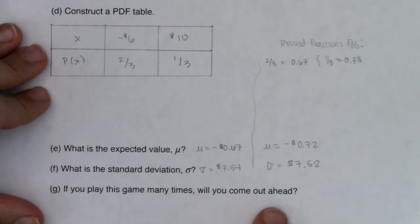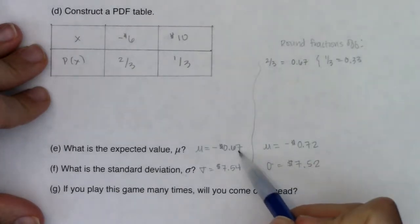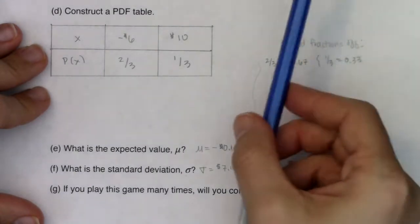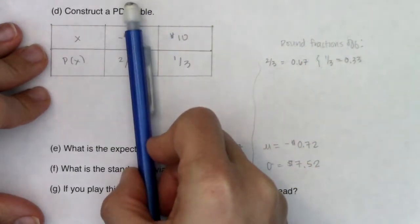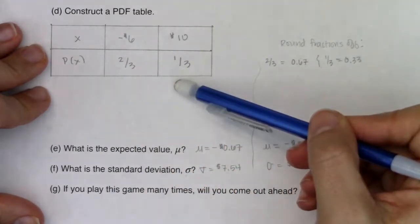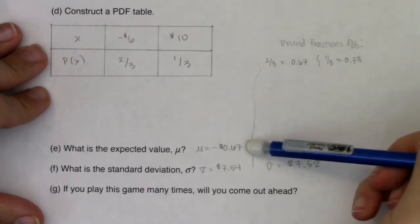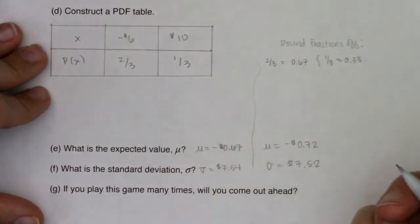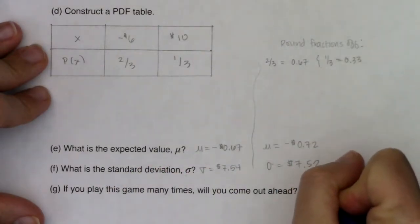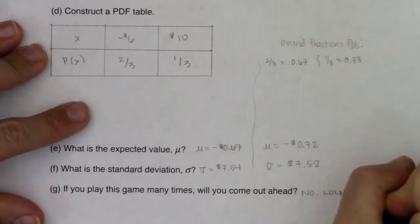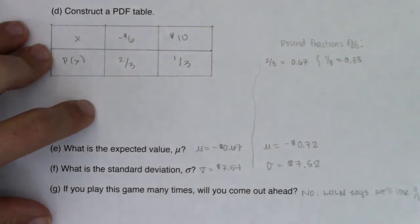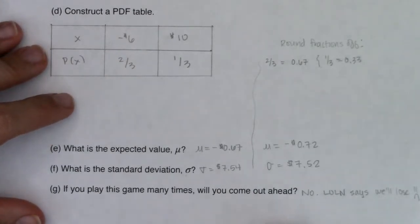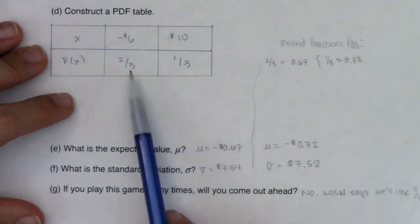And then last but not least, if you play this game many times, will you come out ahead? No. You lose on average. So yes, in any one round of this game, you'll either win 10 or lose 6. But you're going to lose 6 more often than you win 10. And it will average out to you losing in general. So on average, you lose $0.67 or if you've rounded your fraction, $0.72. So if you play this game many times, will you come out ahead? No. Law says we're destined to lose.